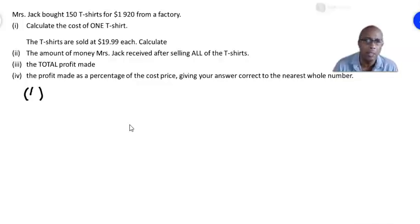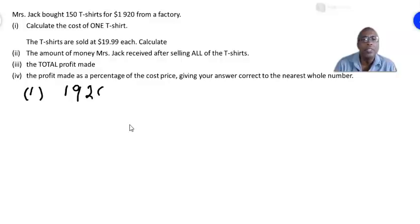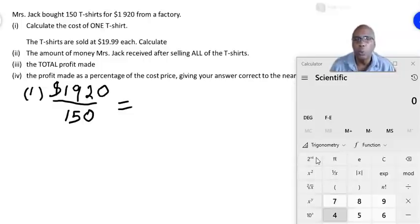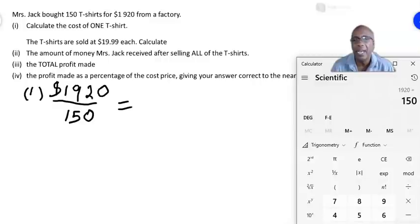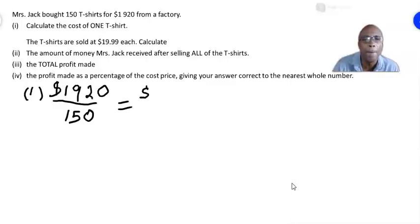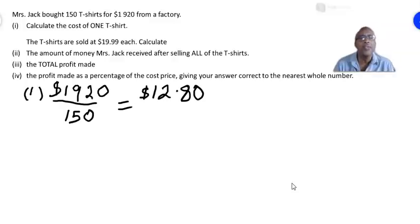To calculate the cost of one t-shirt, you divide the total cost of the t-shirts by the number of t-shirts. The total cost is $1,920 and you divide that by 150. Using the calculator: 1920 divided by 150 gives the answer as 12.80 — that is twelve dollars and eighty cents. So one t-shirt costs Mrs. Jack twelve dollars and eighty cents.